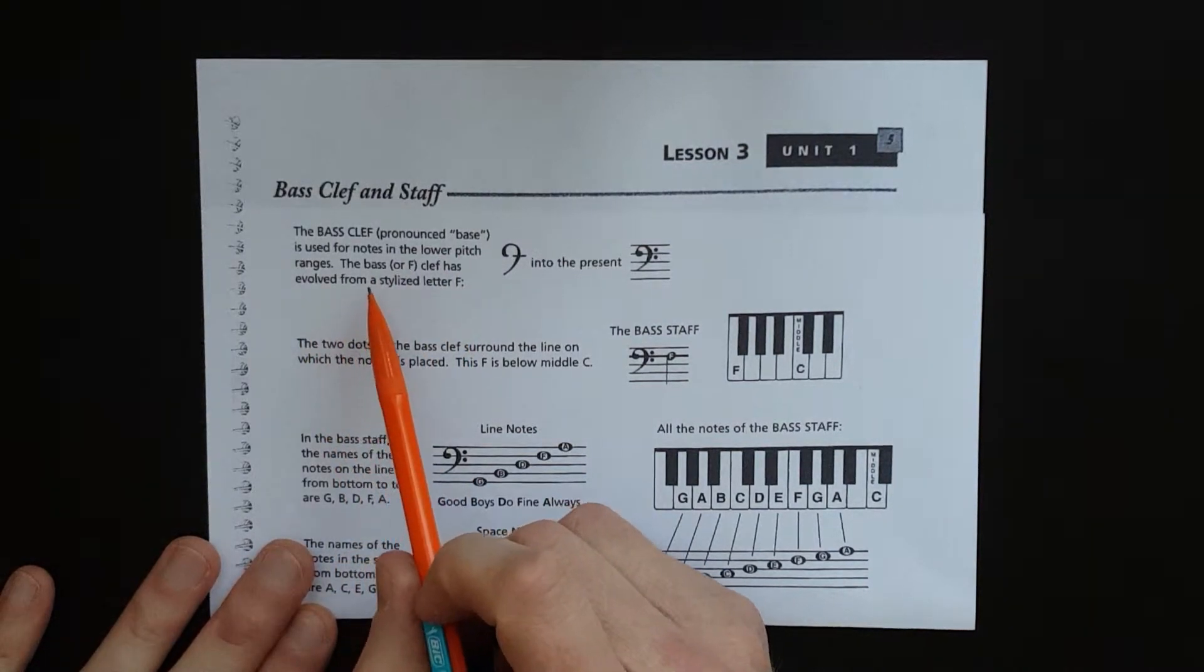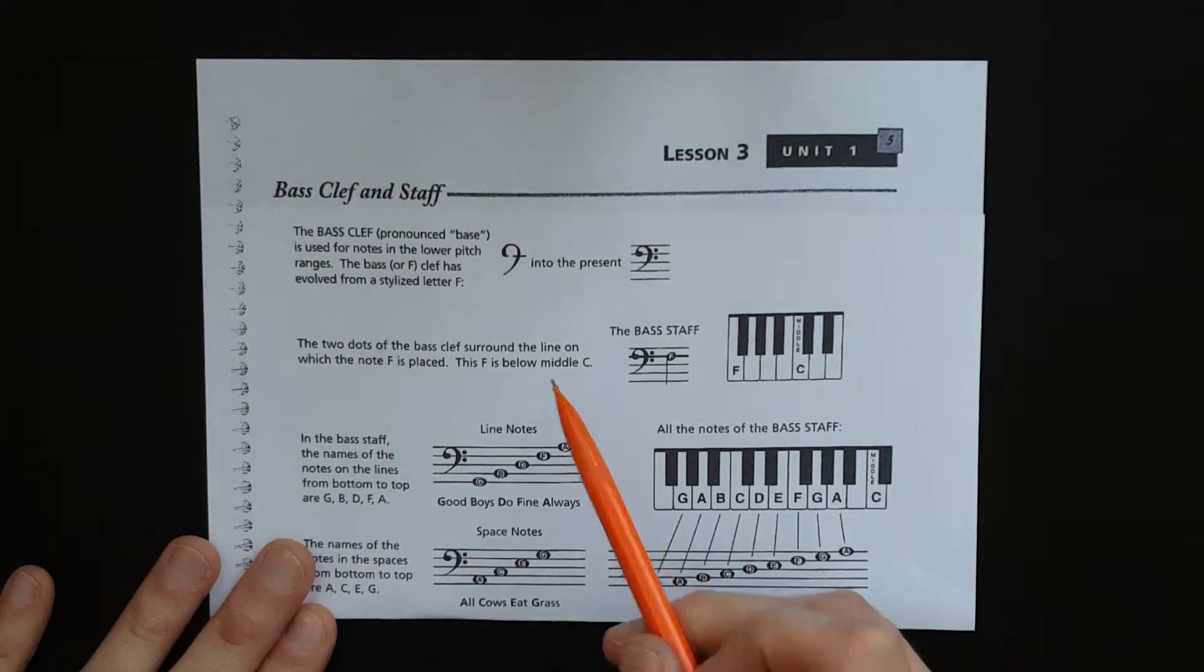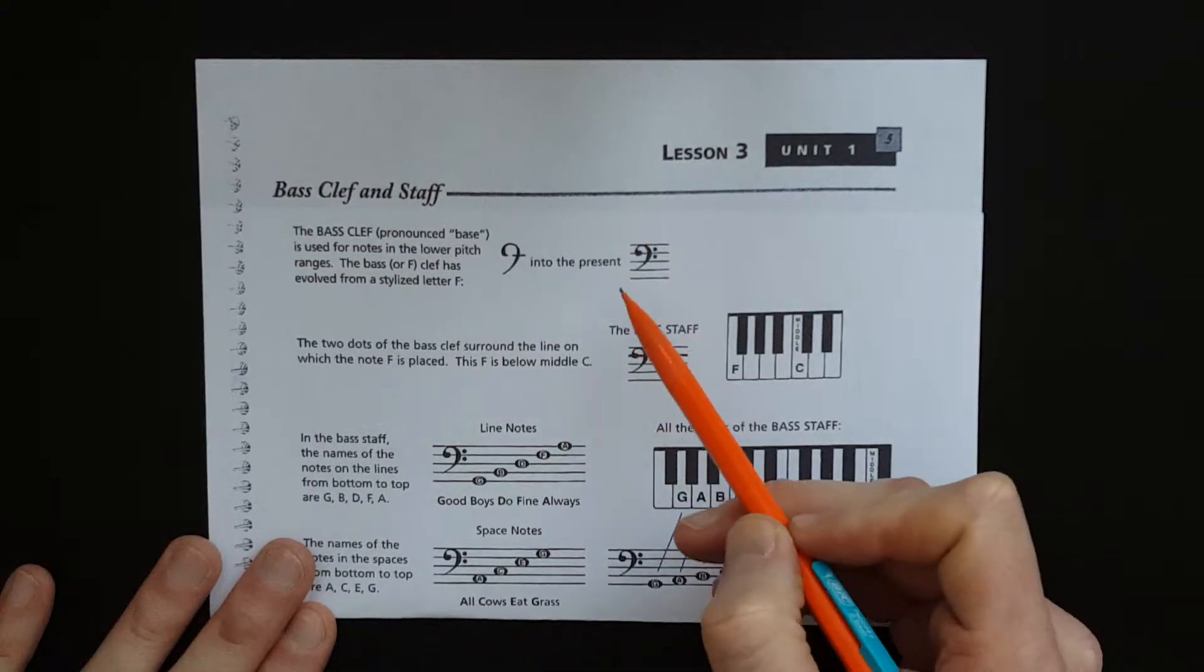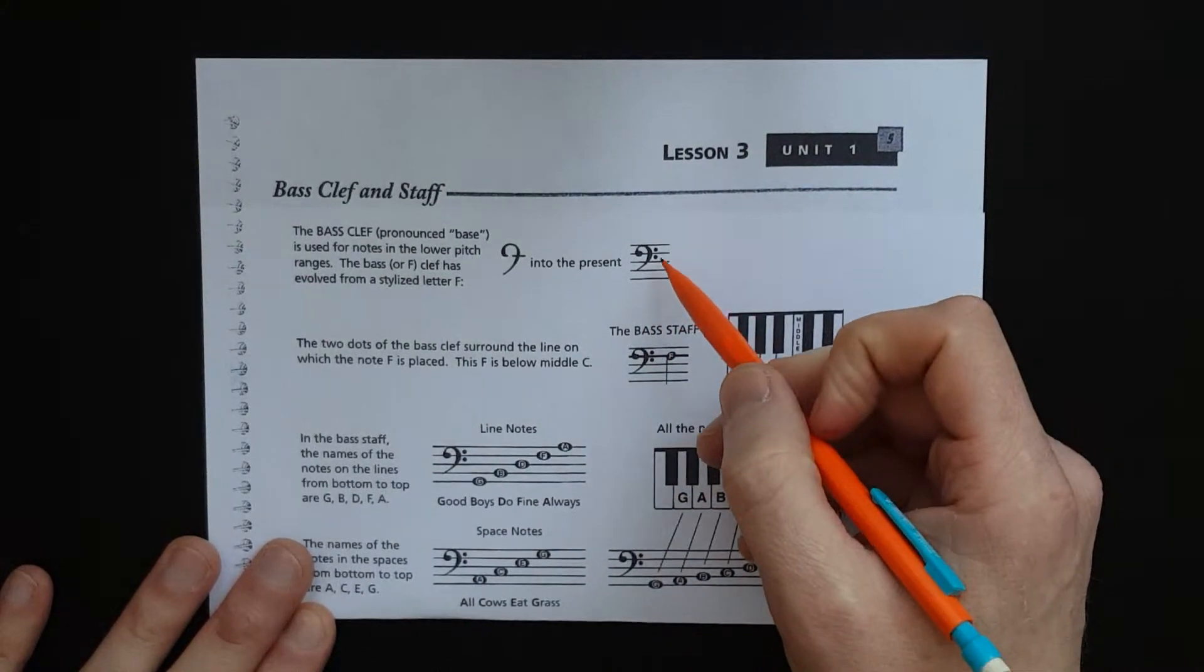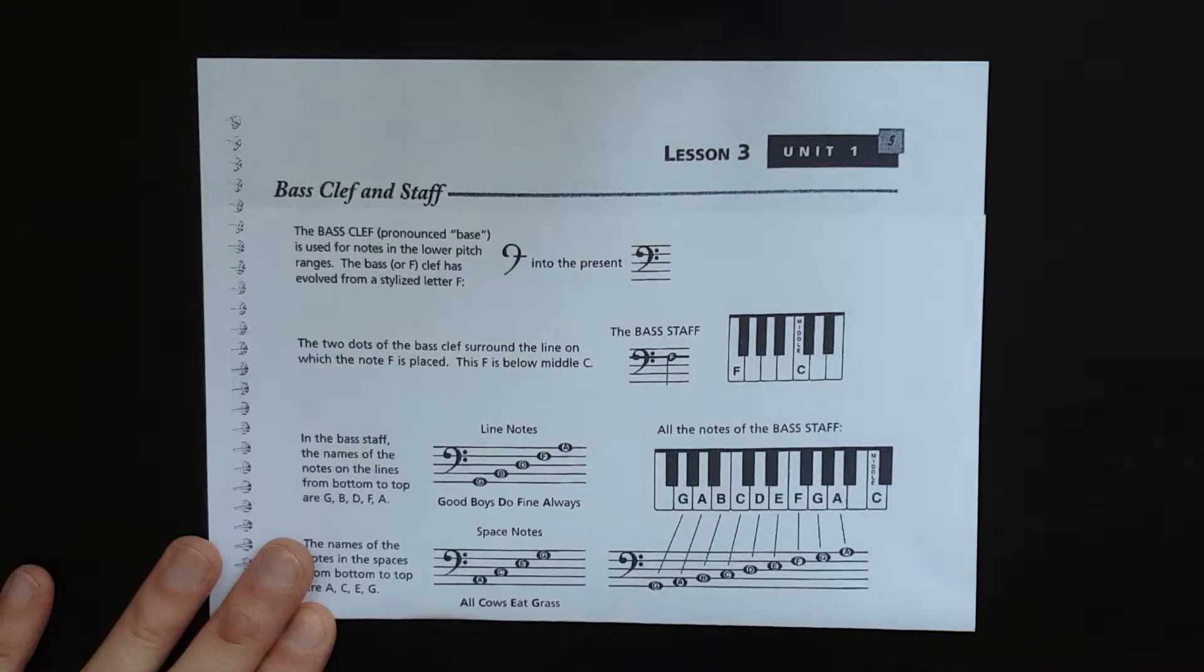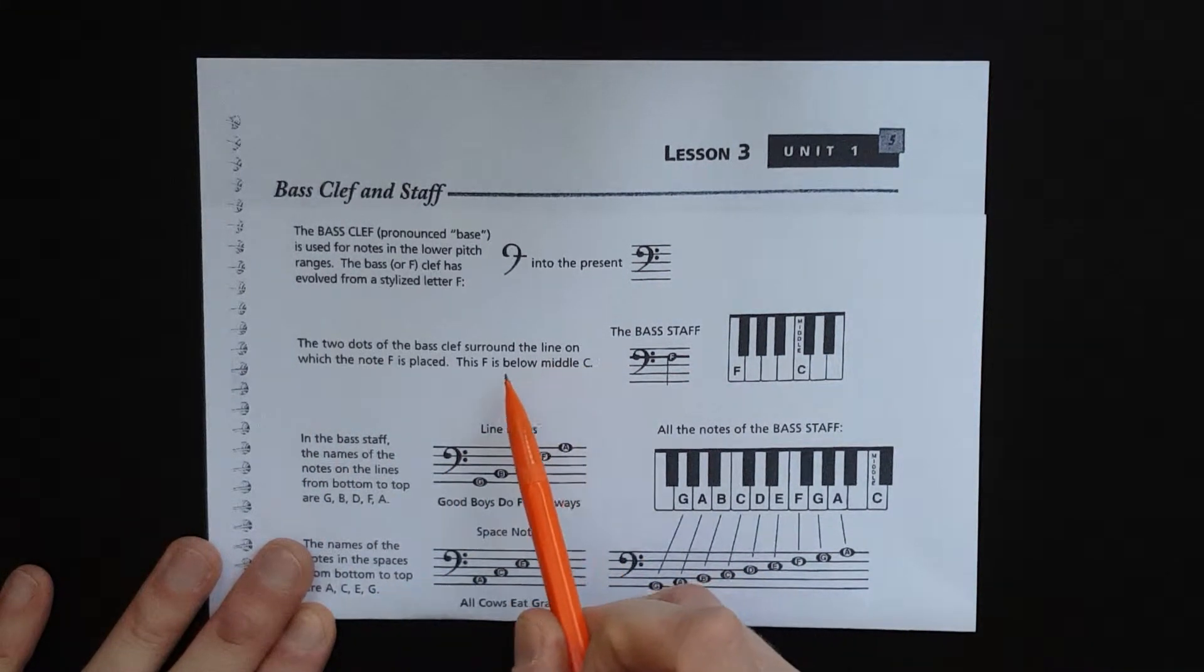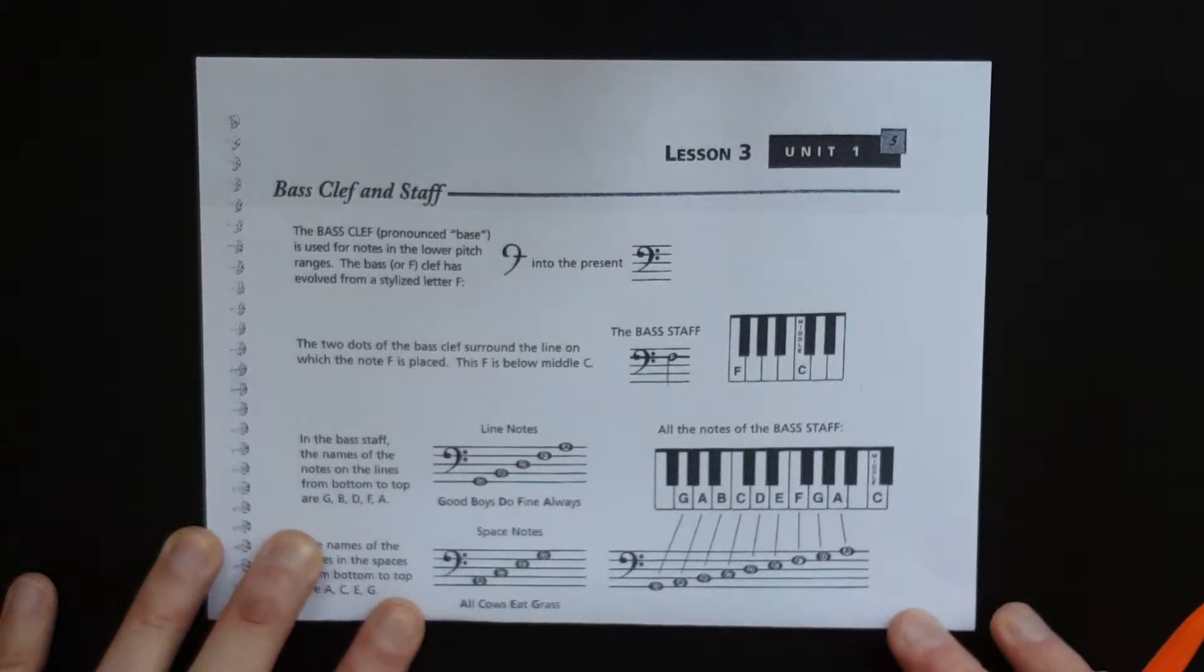The bass or F clef has evolved from a stylized letter F. At some point in history it looked more like a letter F and just got fancier over the years, just like the treble clef. The two dots of the bass clef surround the line on which the note F is placed. This F is below middle C.